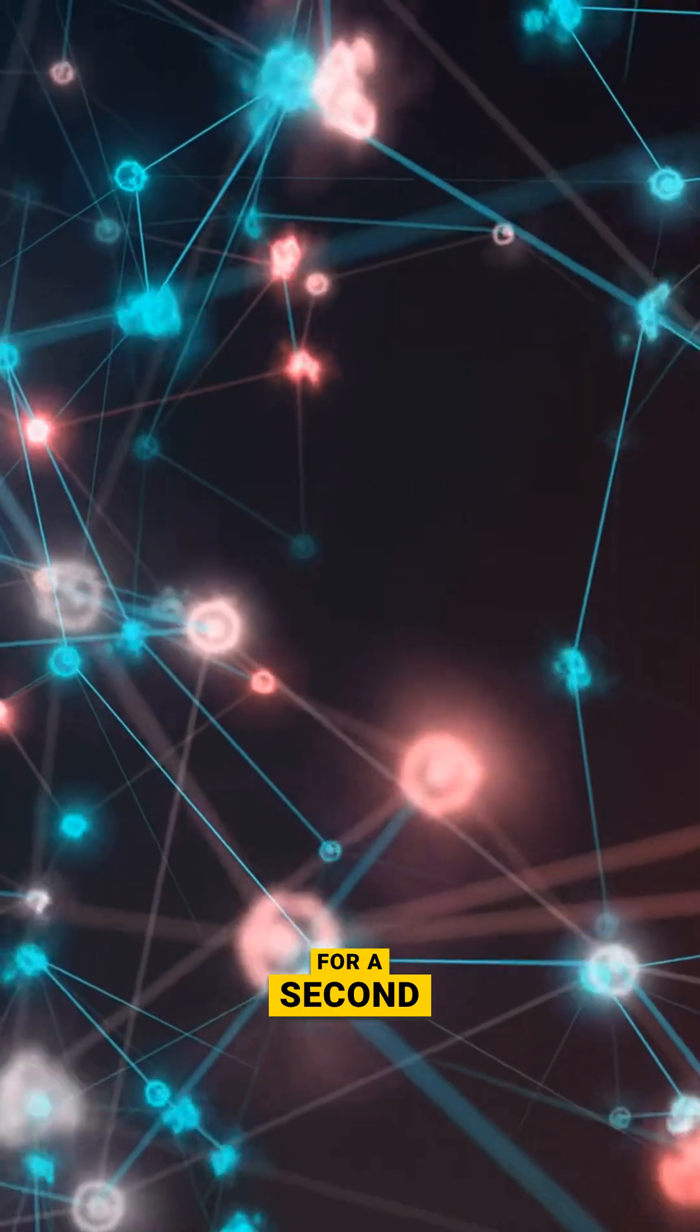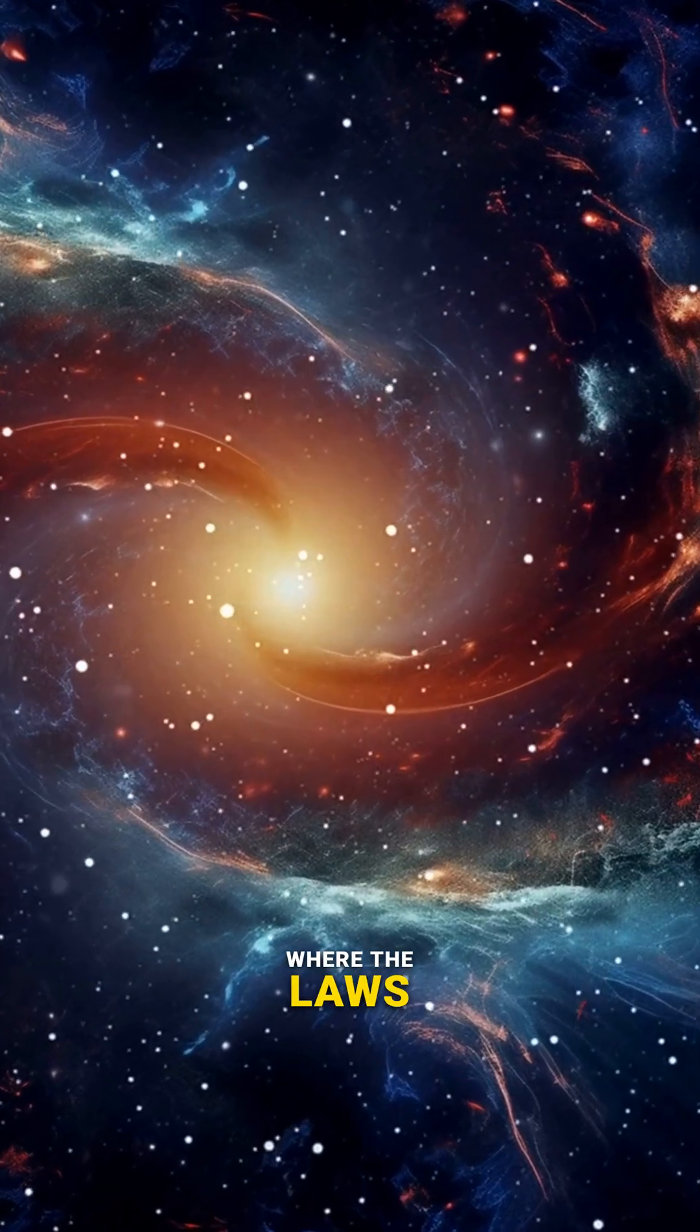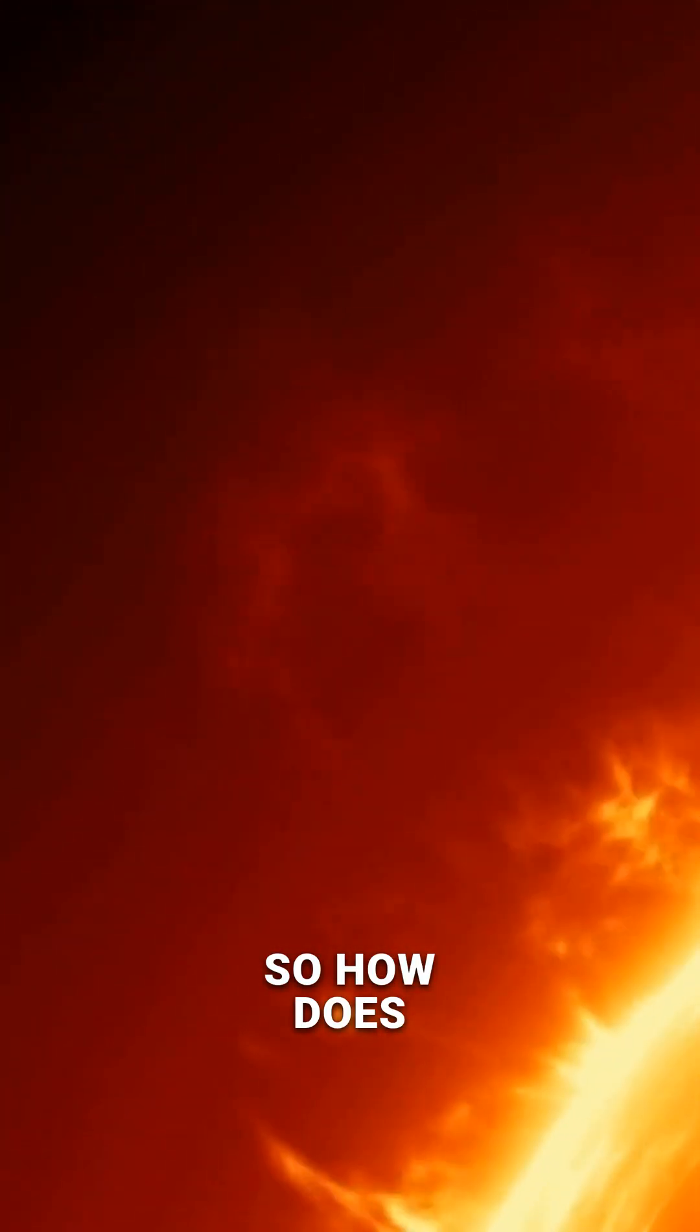Forget black holes for a second, because neutron stars are actual physical objects, where the laws of physics are pushed to the absolute breaking point. So how does it form?